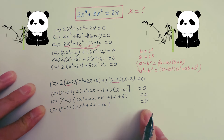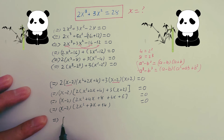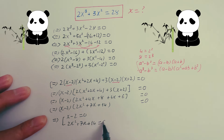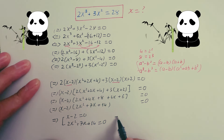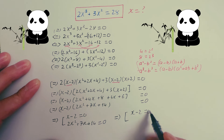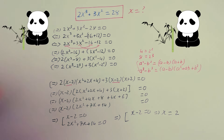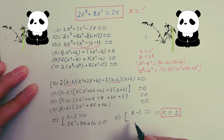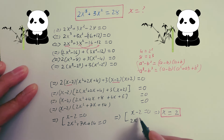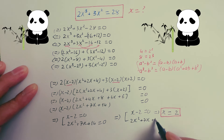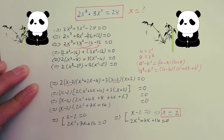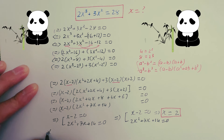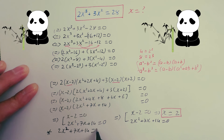Because that product equals zero, you get x minus 2 equals zero, or 2x squared plus 7x plus 14 equals zero. From the first factor, x minus 2 equals zero means x equals 2, so x equals 2 is one solution. Now you have to sort out the quadratic equation 2x squared plus 7x plus 14 equals zero.